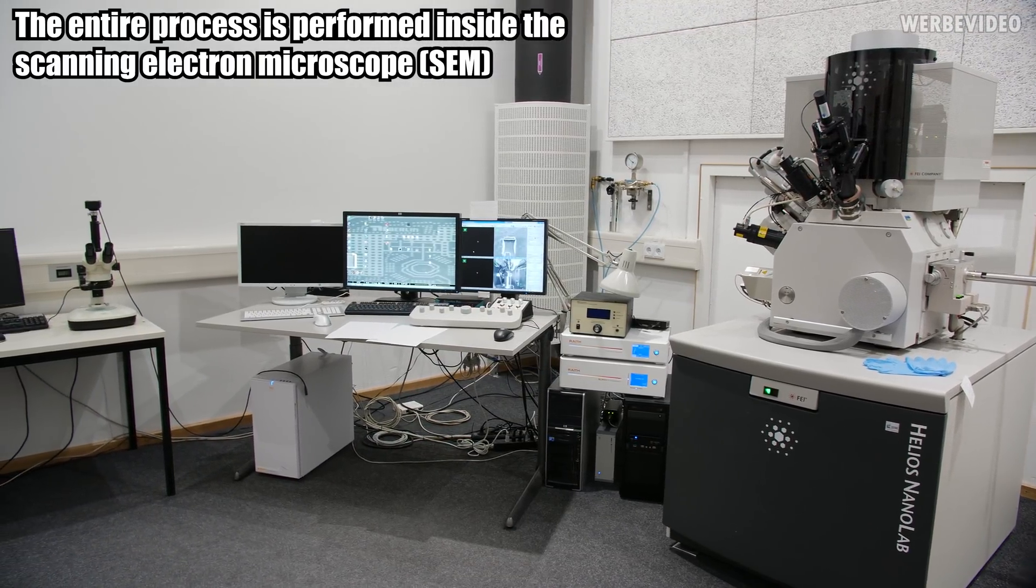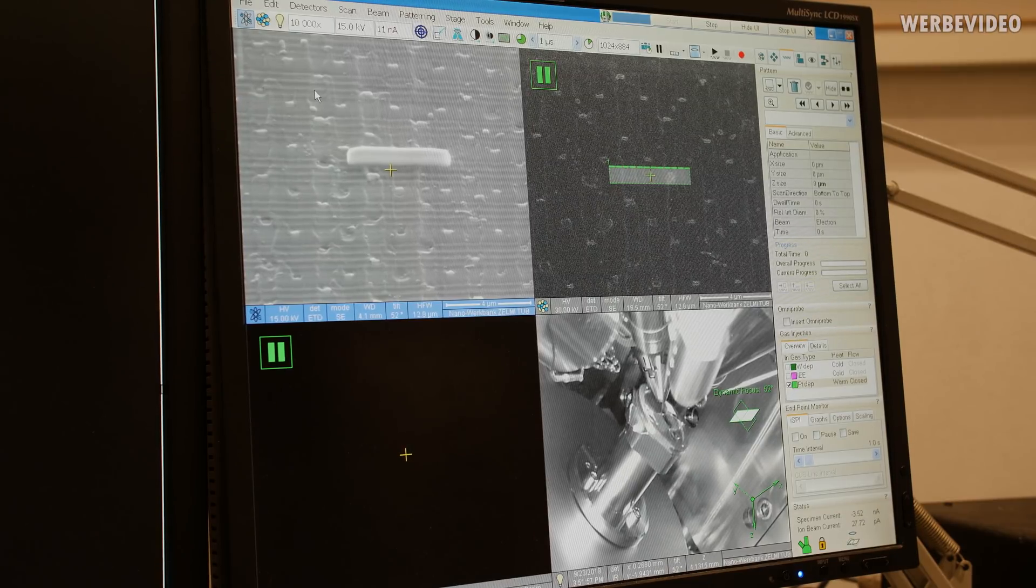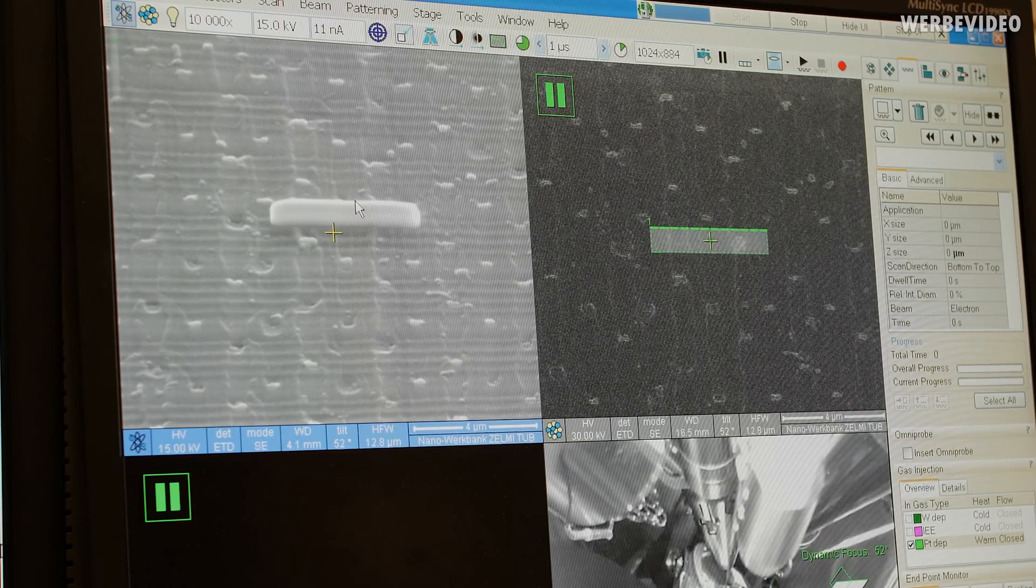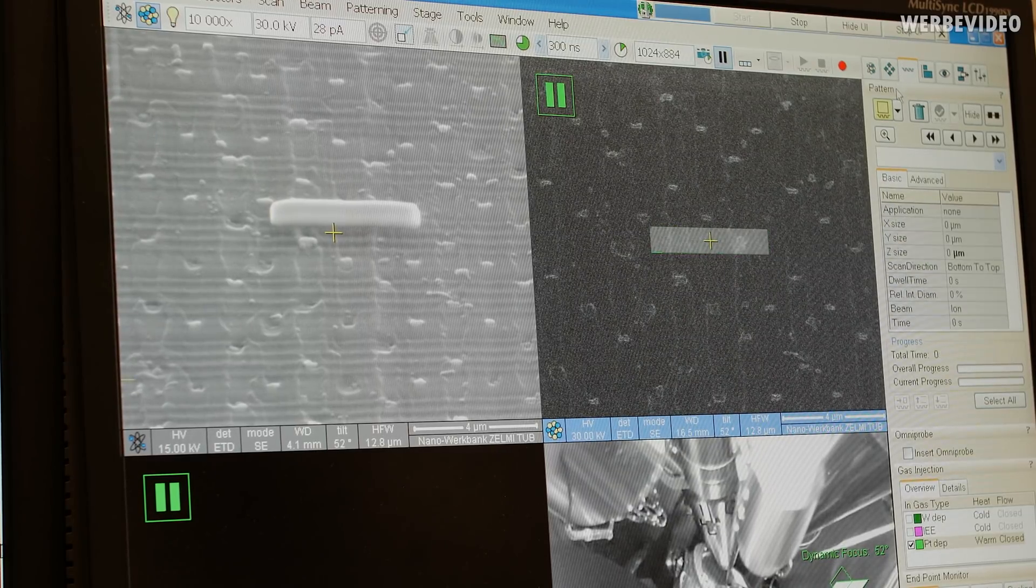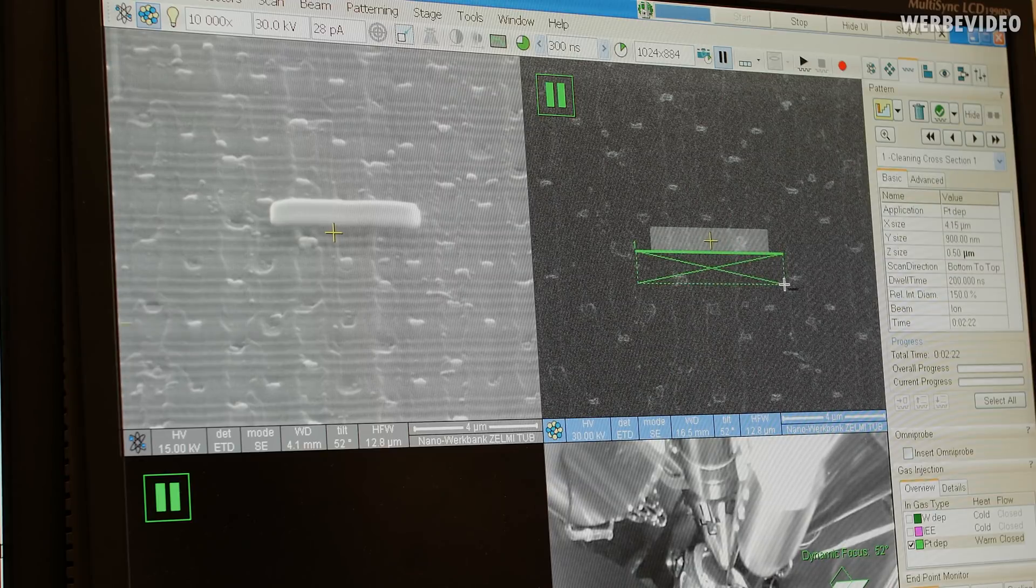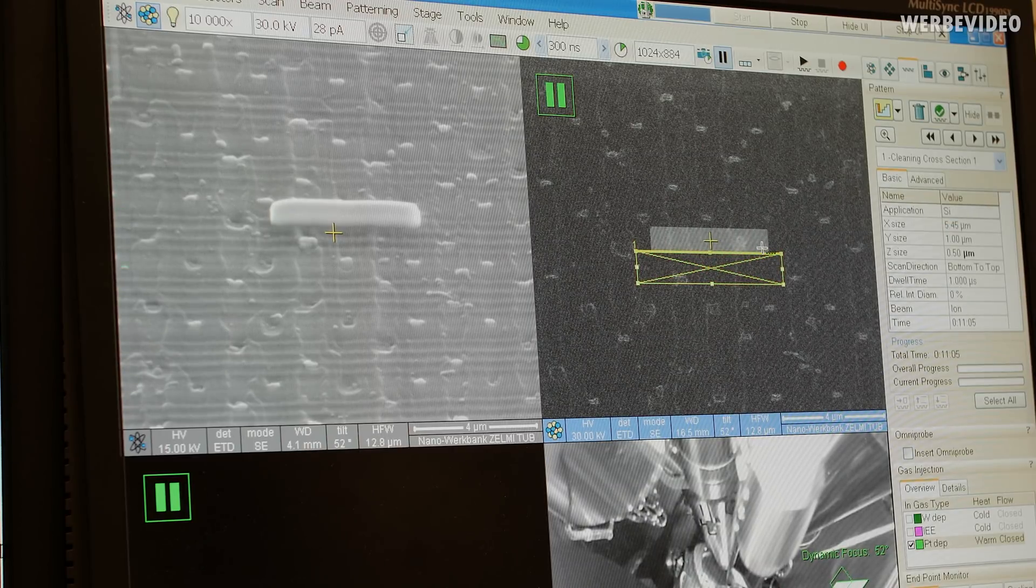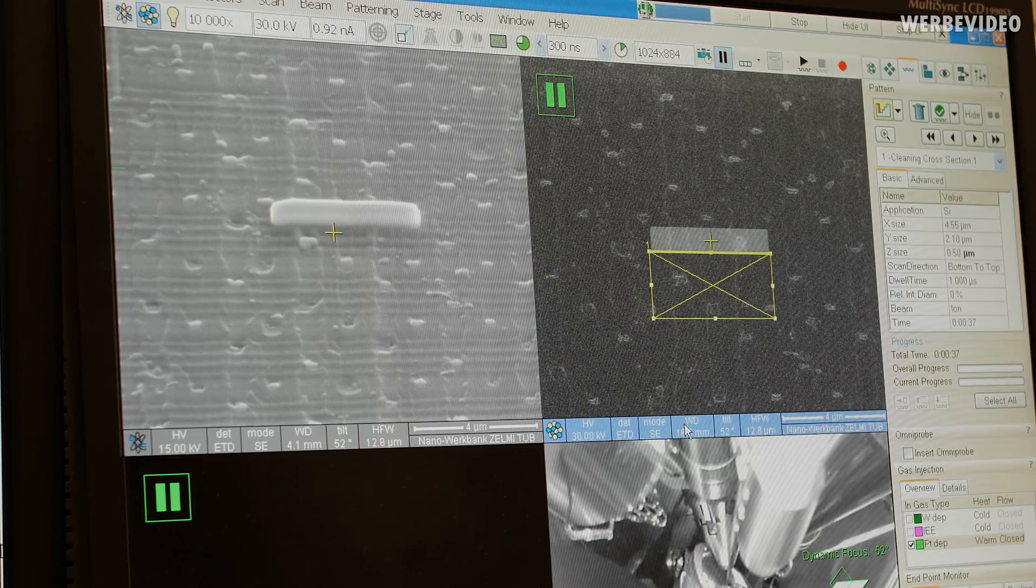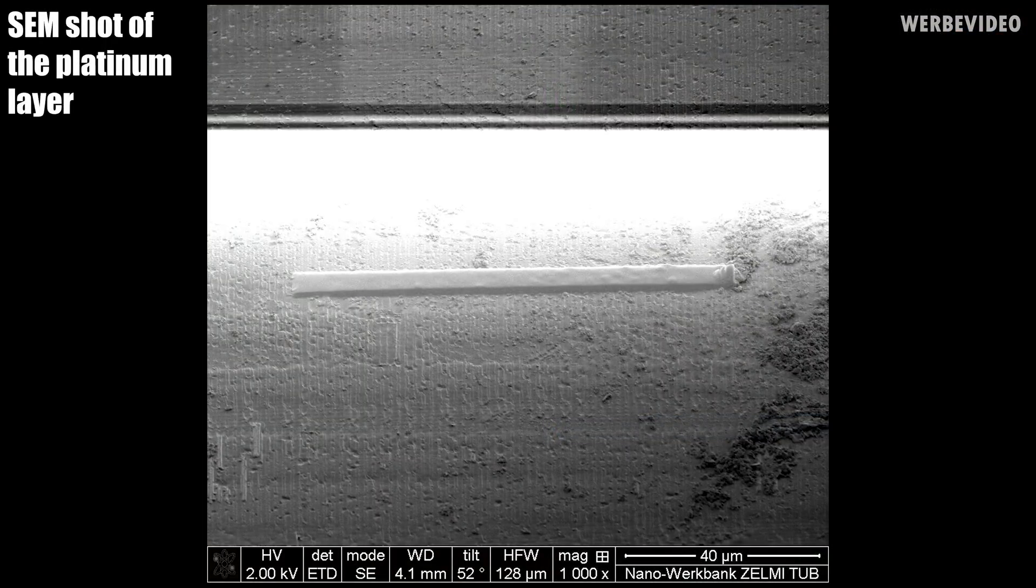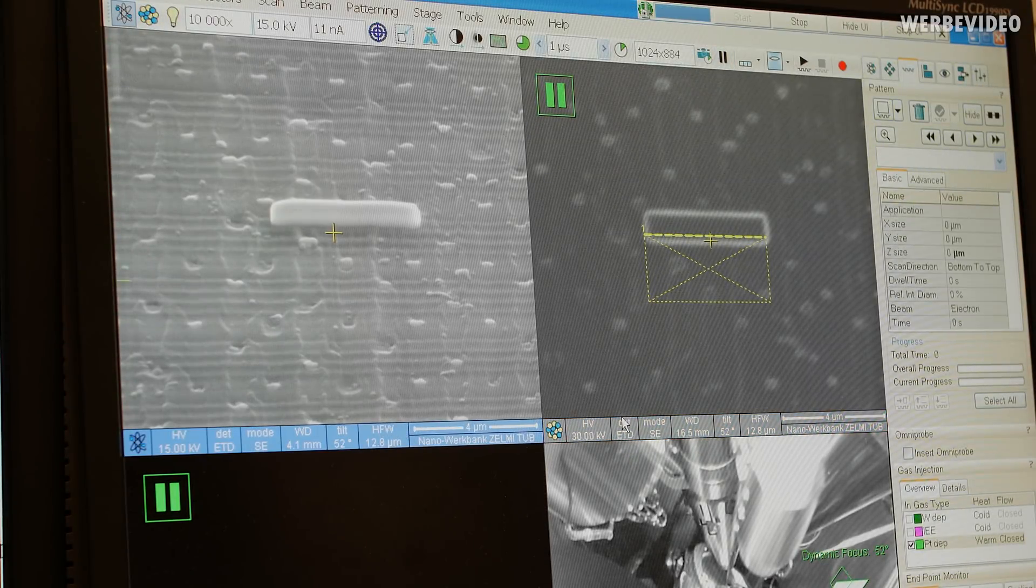And in the next step, we will use the ion beam to remove material here just in front of this protection layer. Now this process is finished. You can clearly see here this protection layer made of platinum. And in the next step, we're going to use the ion beam to remove material. And I will use another patterning here. I now change the application file from platinum deposition to removal of material. And this will be my area. I increase the ion beam current a little bit to make it faster.